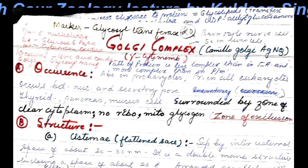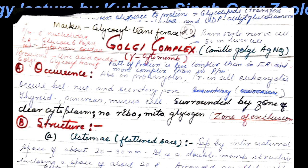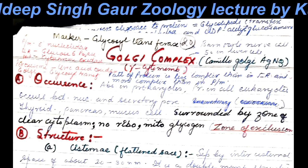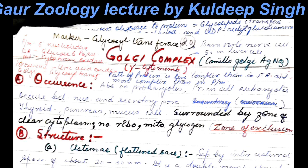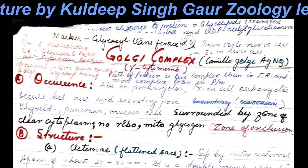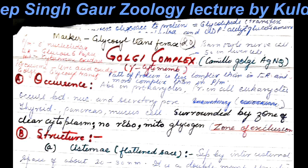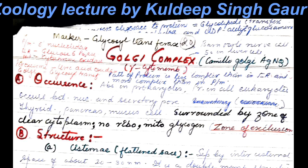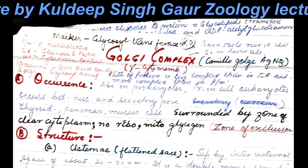We will now study another important organelle: the Golgi complex. It was first observed by Camillo Golgi when he stained the cell with silver nitrate. The cell in which he discovered this organelle was the barn owl's nerve cell. The marker enzyme of the Golgi complex is glycosyl transferase, and they are also termed gamma cytomembranes as mentioned in the GIRL system.